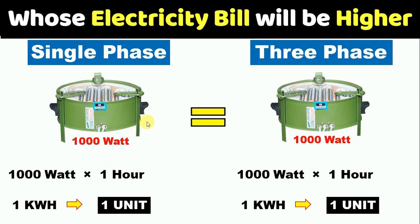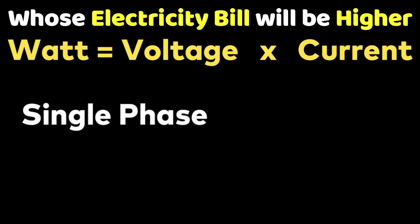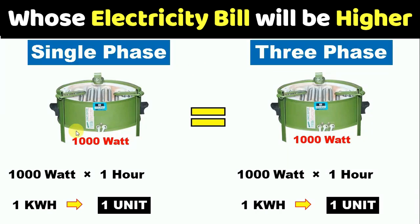It means electricity bill will be the same in both conditions. Notice that in this power consumption calculation, we are not mentioning anywhere whether it is single phase or three phase. We are simply multiplying power and time — how much load is running for how much time — and on that basis the unit is calculated. This is why power consumption is the same for three phase and single phase. Now there can be a doubt: voltage is also involved, and for single phase voltage is low while for three phase voltage is high — so why are we getting the same unit or power consumption? Let us discuss this.